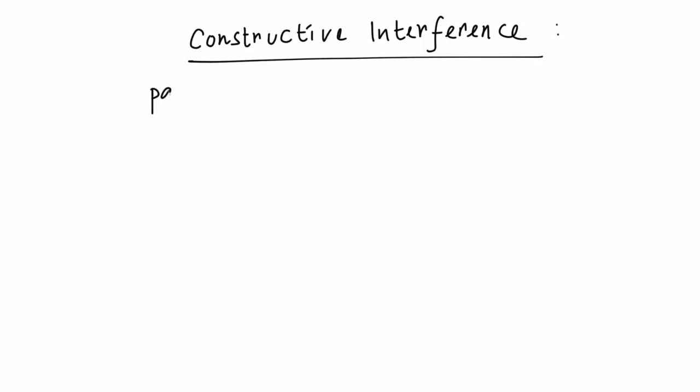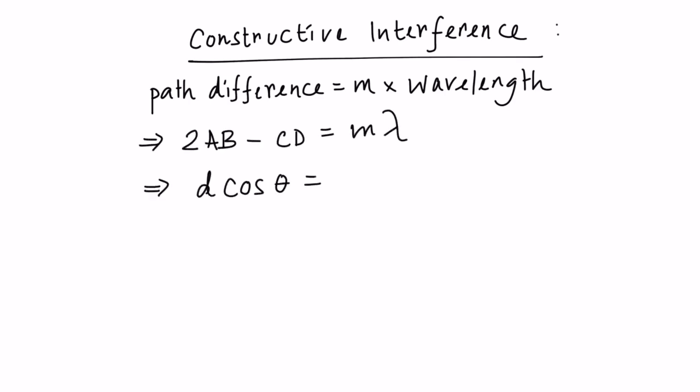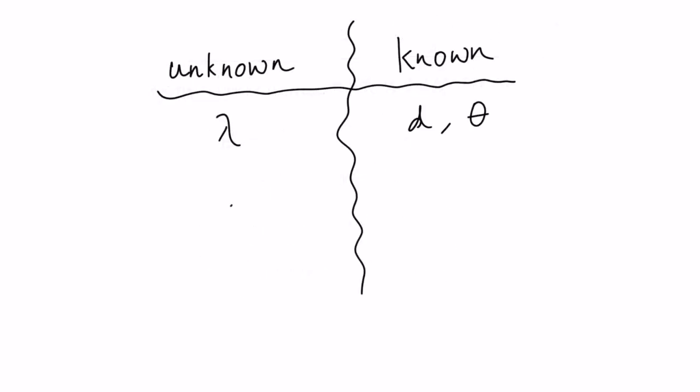This relates the path length difference previously mentioned to the constructive interference patterns observed on the screen. This condition shows that the path difference must equal an integer number of wavelengths in order to produce a constructive interference band. This means the interferometer can be used to determine unknown wavelengths with a known distance d and angle of incidence or vice versa. It can also be used to determine if the light source is monochromatic.